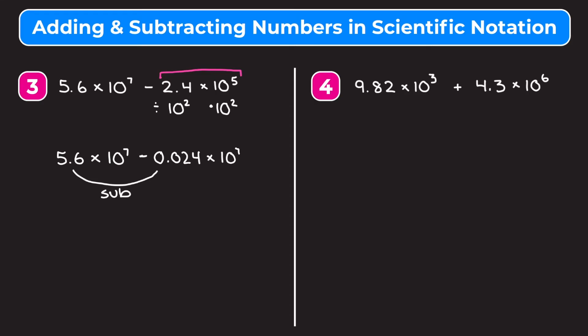I'm going to use the calculator to subtract 5.6 minus 0.024, which ends up as 5.576. And because both of our numbers are being multiplied by 10 to the seventh, we can just tack that on at the end. So we get 5.576 times 10 to the seventh as our answer.